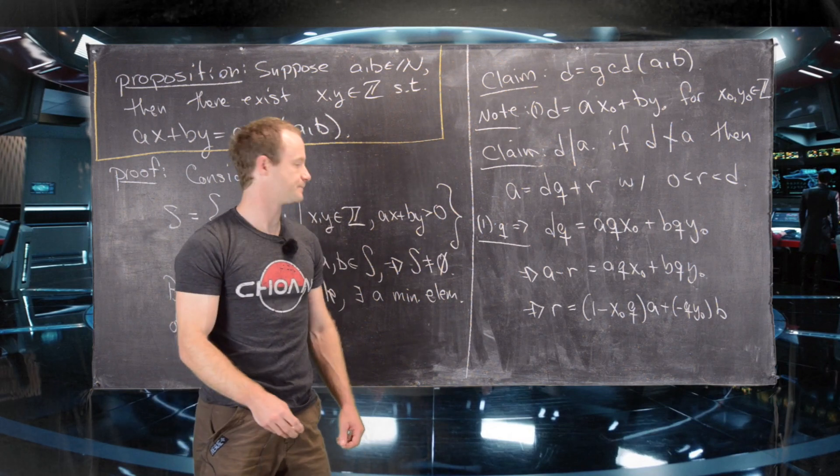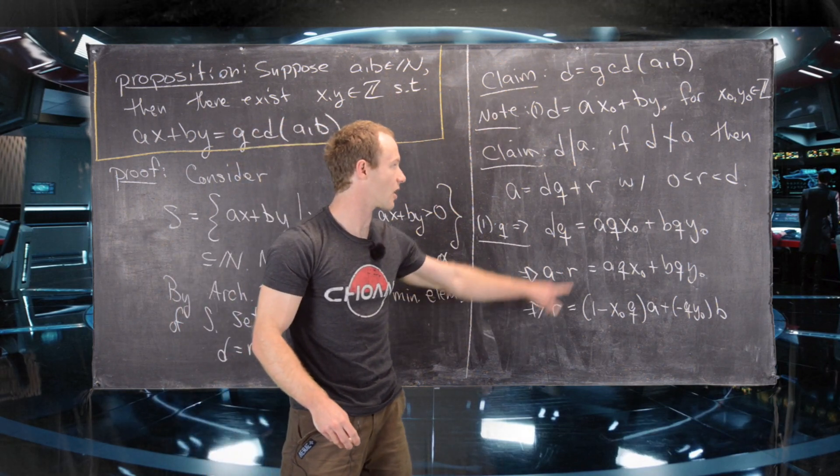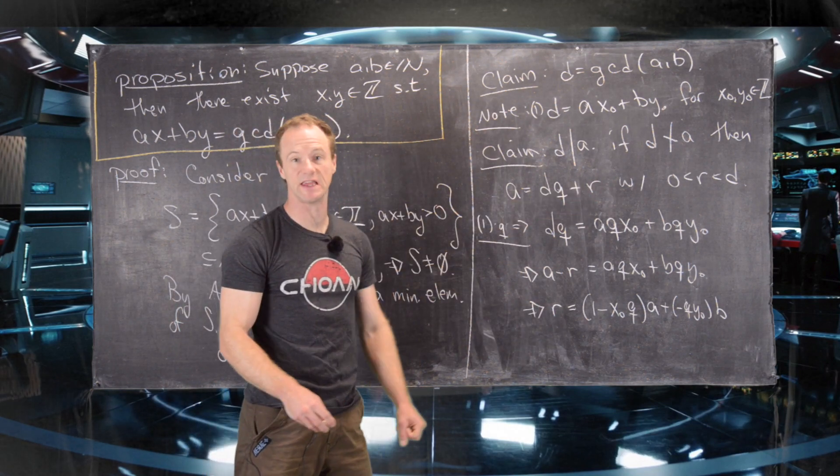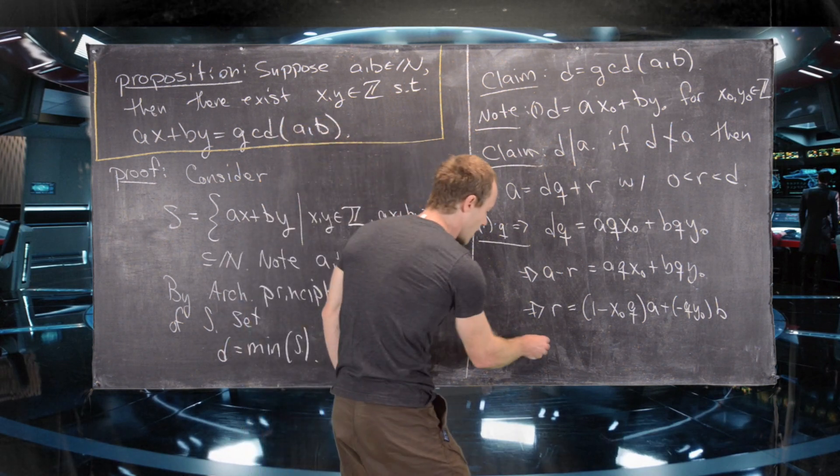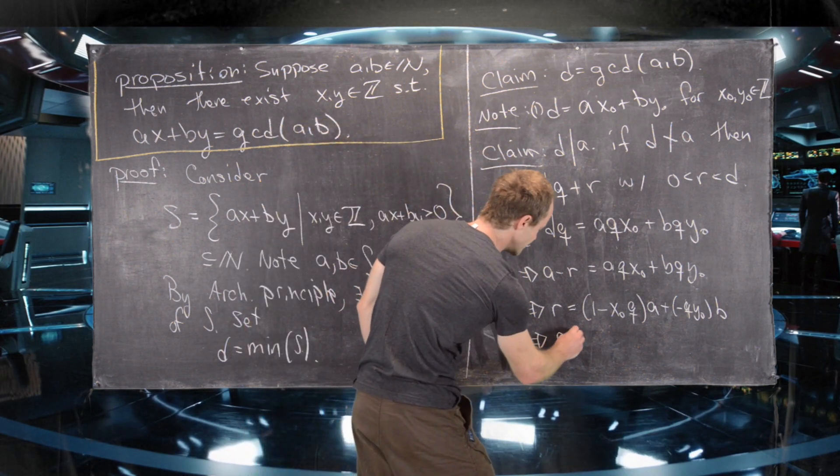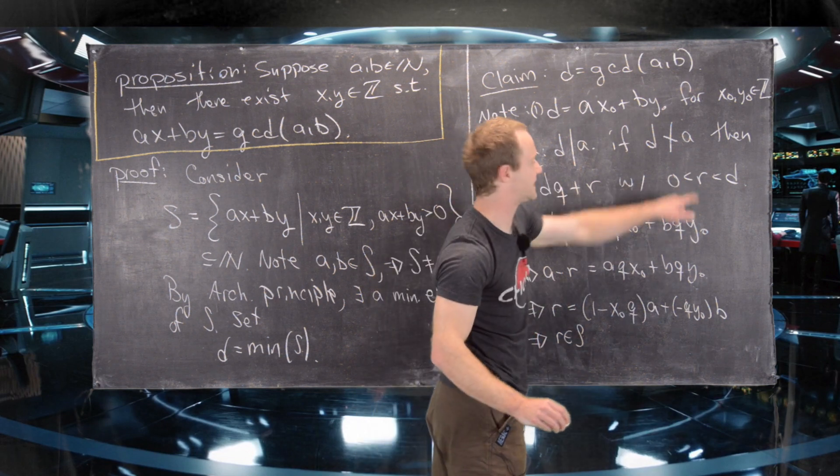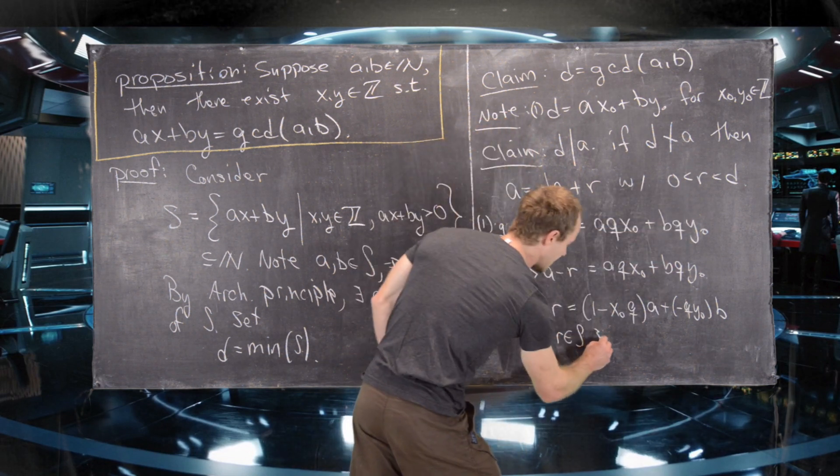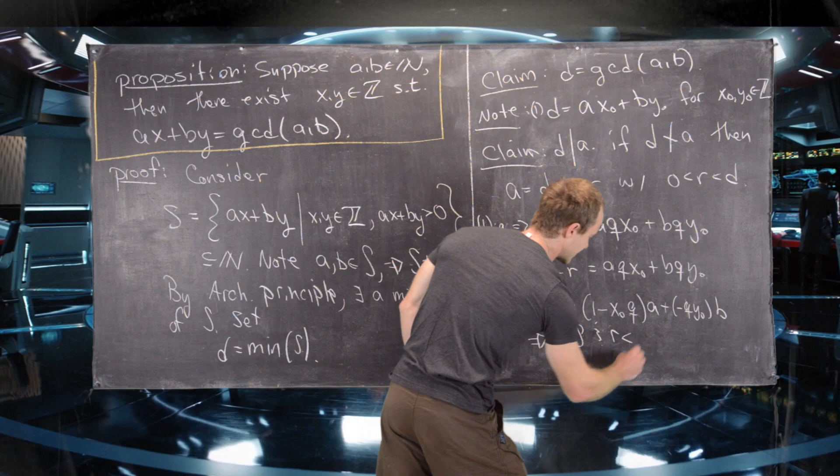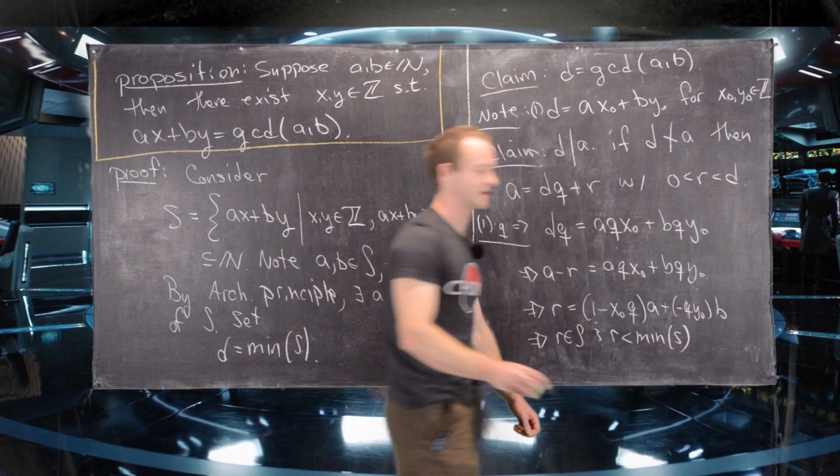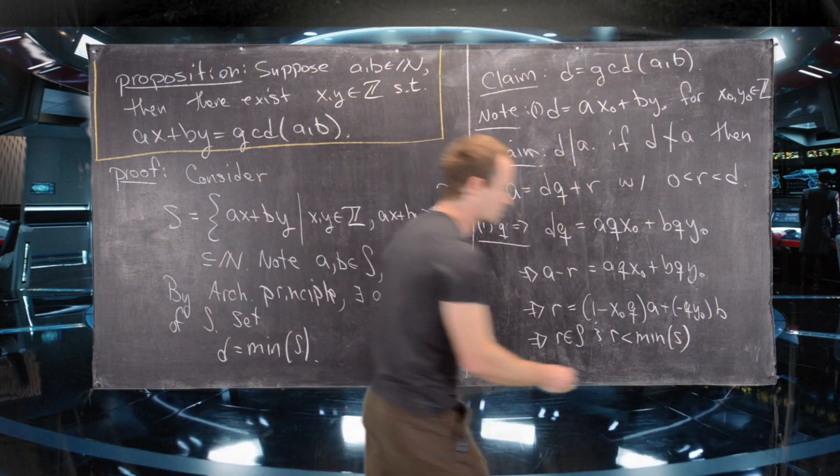But now notice that R is strictly less than D, which tells us that R, first of all, is an element of S because it's bigger than 0. And R is strictly less than the minimum of the elements of S. But that's a contradiction.